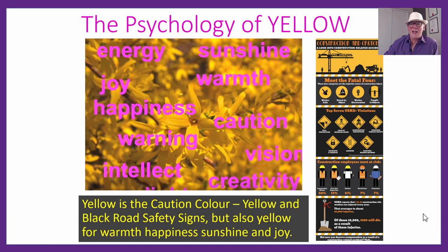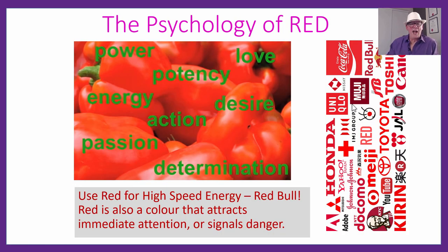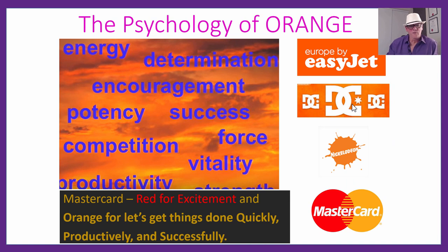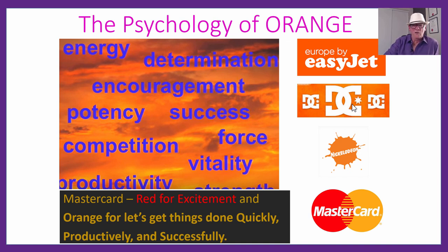Yellow: we've all seen black and yellow warning signs, so it's a caution color, but also sunshine, warmth, and happiness. Red is for action — high speed energy, Red Bull, Honda motorcycles — and also for food brands like KFC. McDonald's uses red and yellow, combining two psychological effects. MasterCard uses red for excitement and orange for quick success — combining colors to get two psychological messages at once.